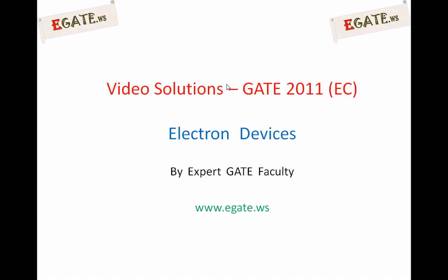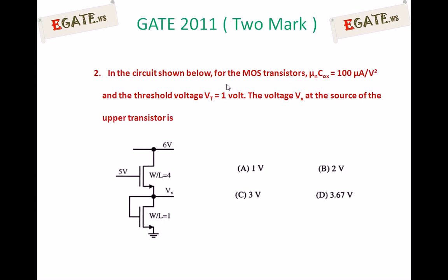Video solutions for GATE 2011 ECE paper. The topic being discussed is Electron Devices, in the series of 2-mark question discussion. The second 2-mark question given in GATE 2011 is: for the given circuit of NMOS transistors, µnCox equals 100 µA per volt squared and threshold voltage VT is 1 volt. The voltage Vx at the source of the upper transistor is: A) 1 volt, B) 2 volts, C) 3 volts, D) 3.67 volts.